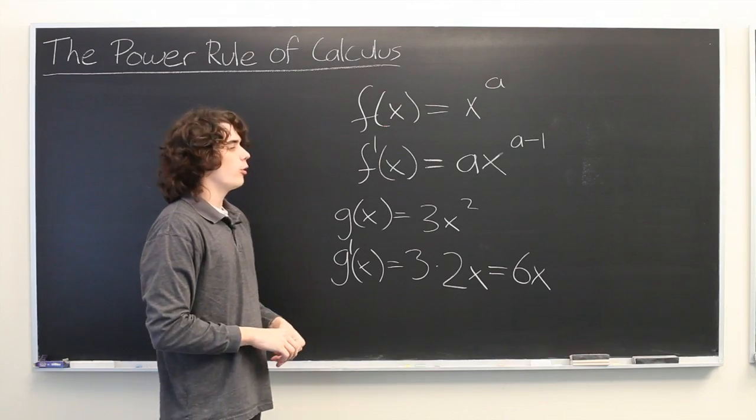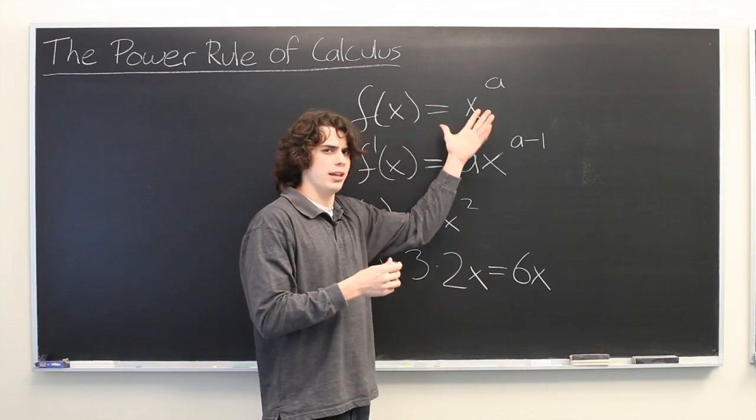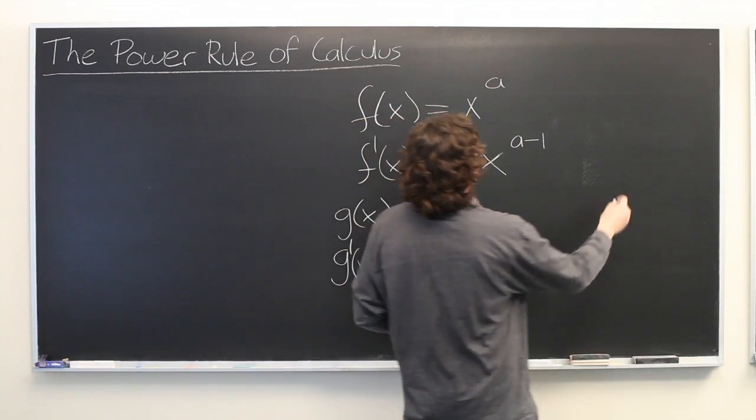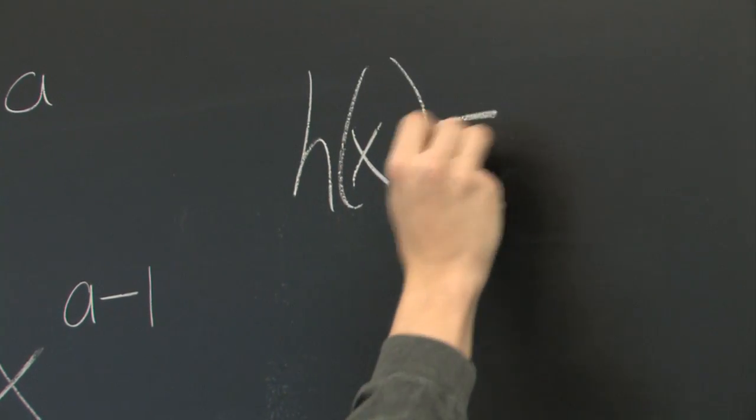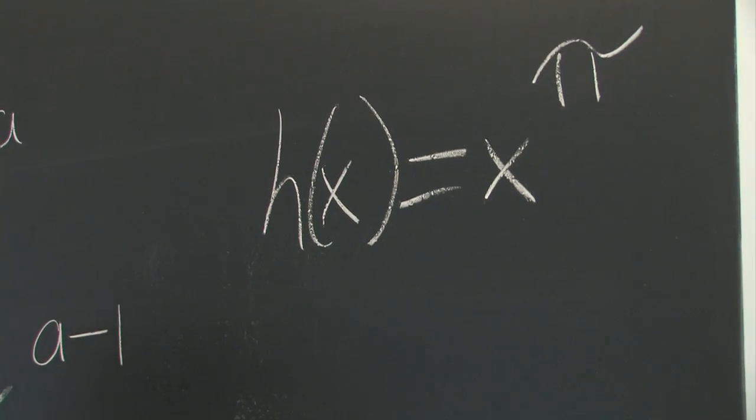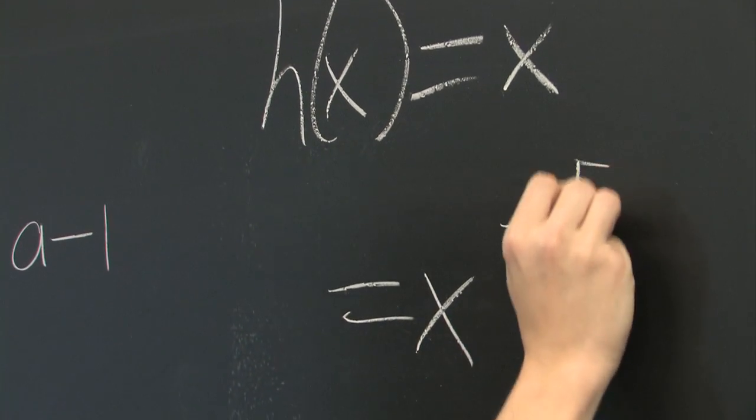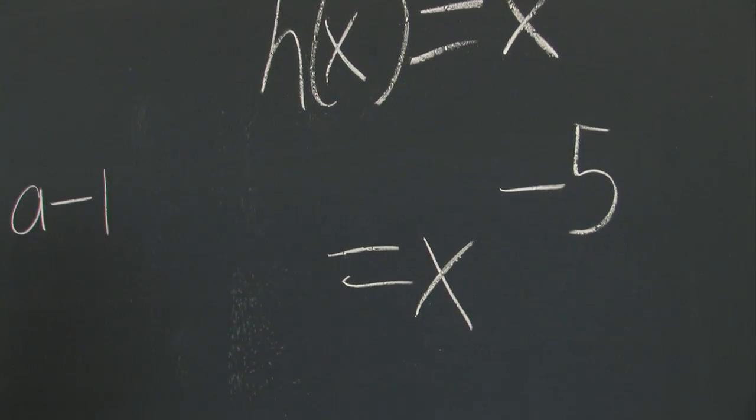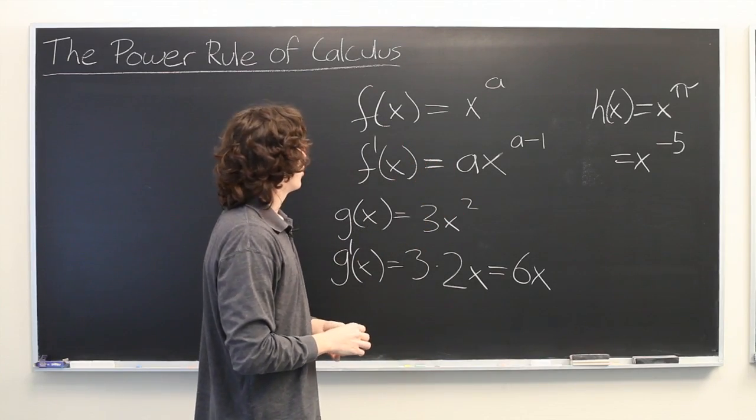One interesting thing to note about the power rule is that it can be used for pretty much any exponent. Even if something as crazy as, let's say we've got h(x) equals x to the power of pi, or something like x to the negative 5th power. It doesn't matter if it's irrational, fractional, negative, positive. You can always use this rule.